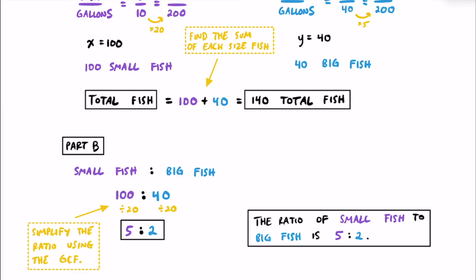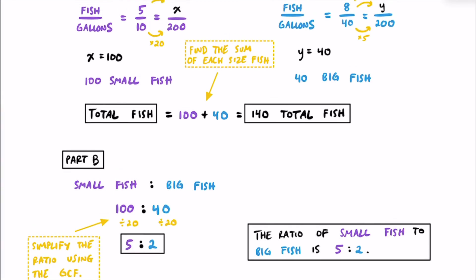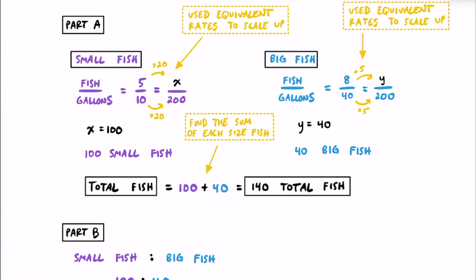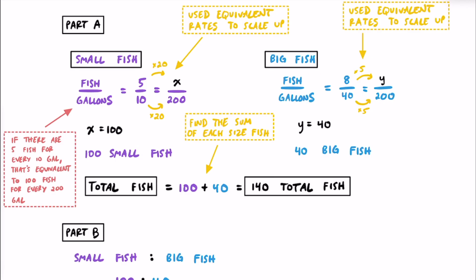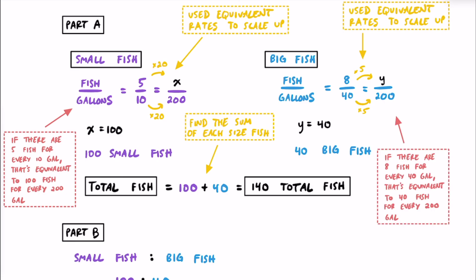This makes sense — we have more small fish because they need less water, and fewer large fish because they need more space. Additional explanation could include: 5 fish per 10 gallons equals 100 fish per 200 gallons, and 8 fish per 40 gallons equals 40 fish per 200 gallons. That wraps up these 5 practice problems on sixth grade concepts. If you found the video helpful, give it a thumbs up and share it. Keep up the great work!